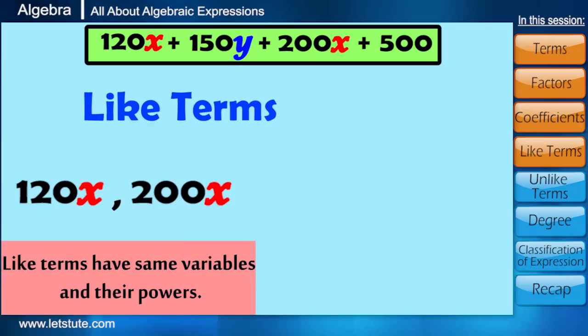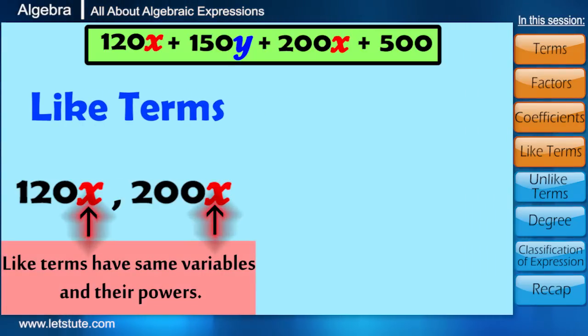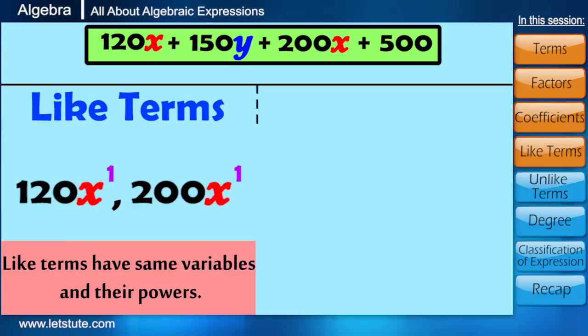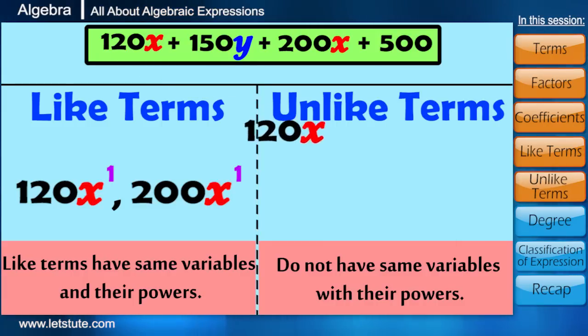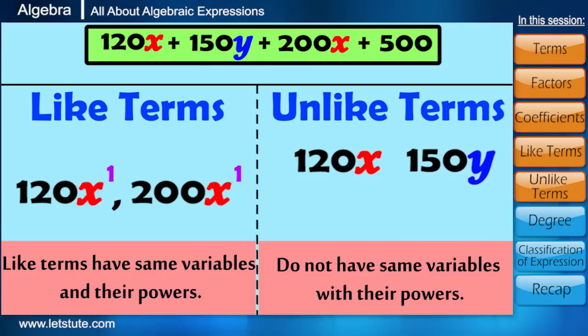Mathematically, like terms are those terms that have same variables and their powers. On the other hand, terms which do not have same variables with their powers are called unlike terms. Here 120X and 150Y, 150Y and 200X are called unlike terms.